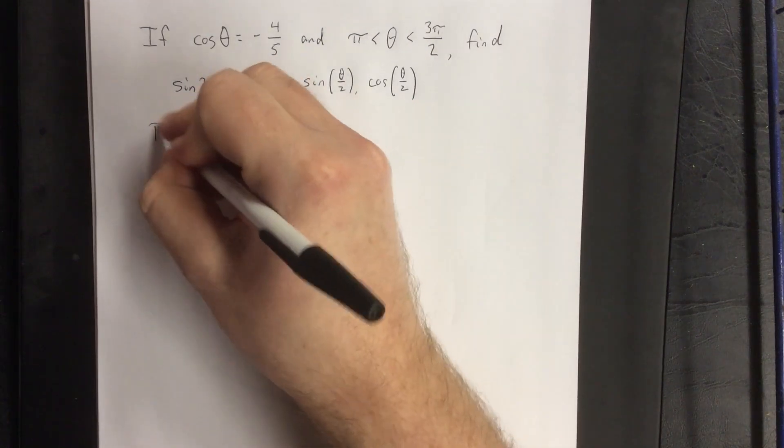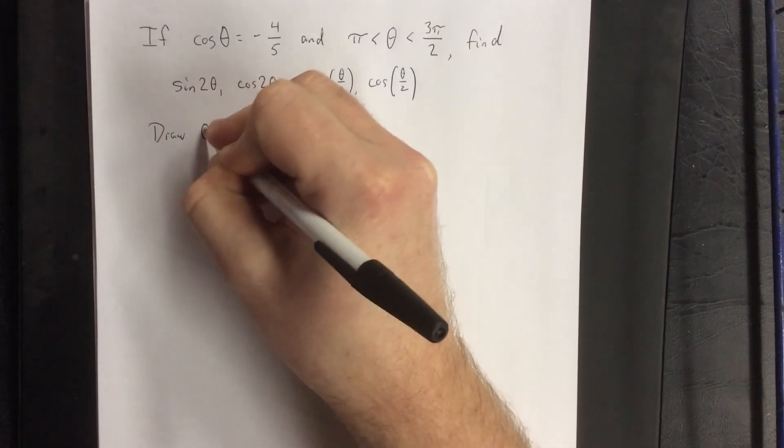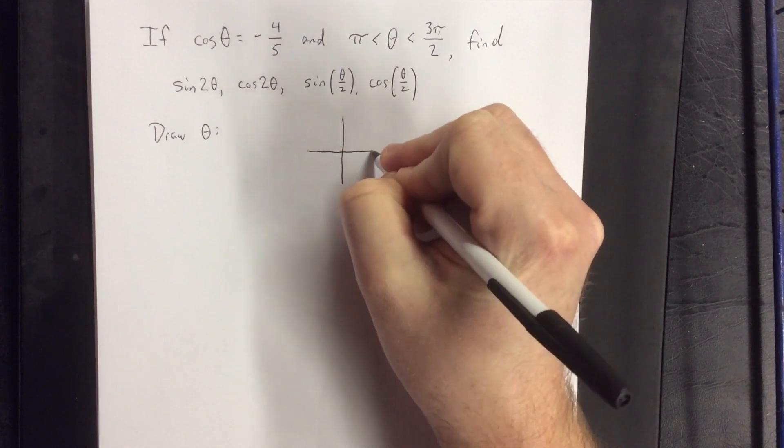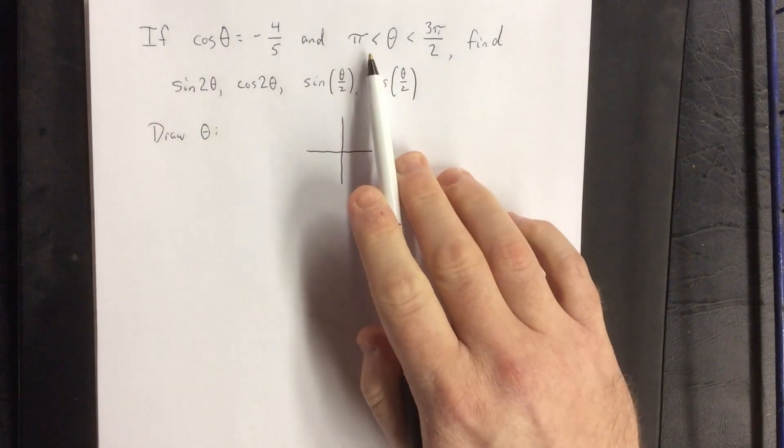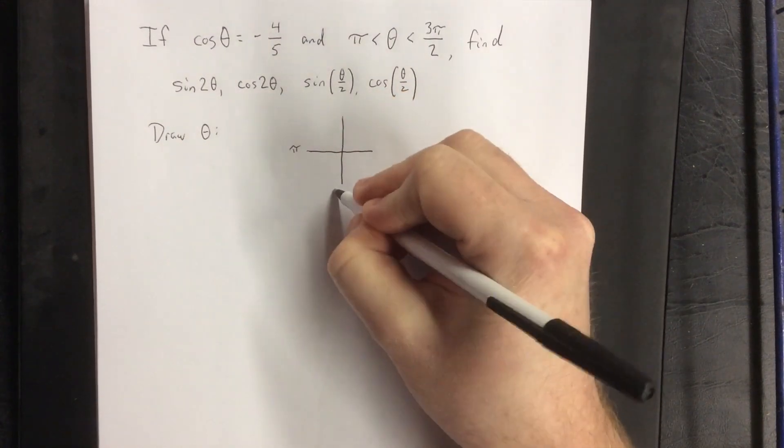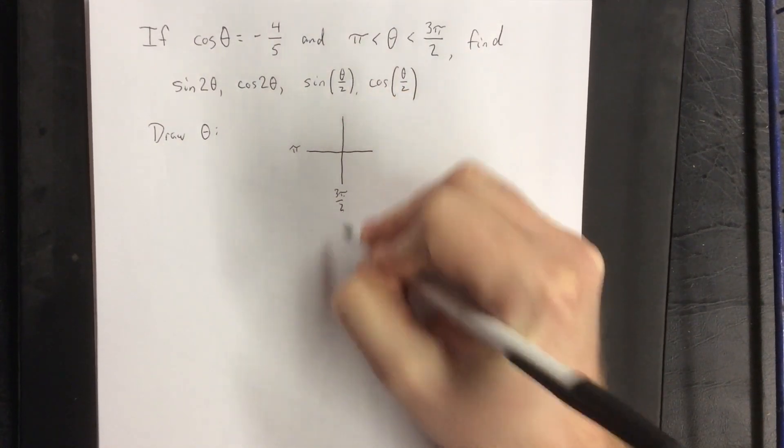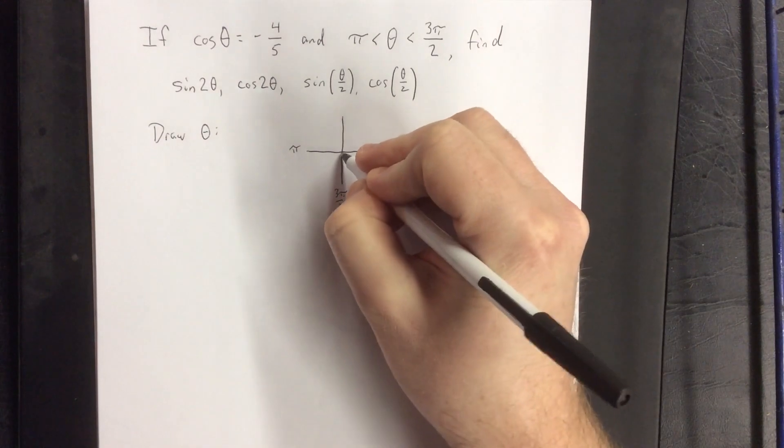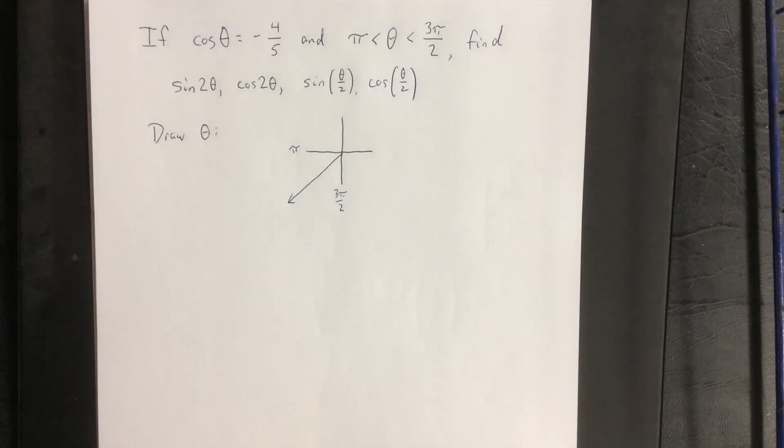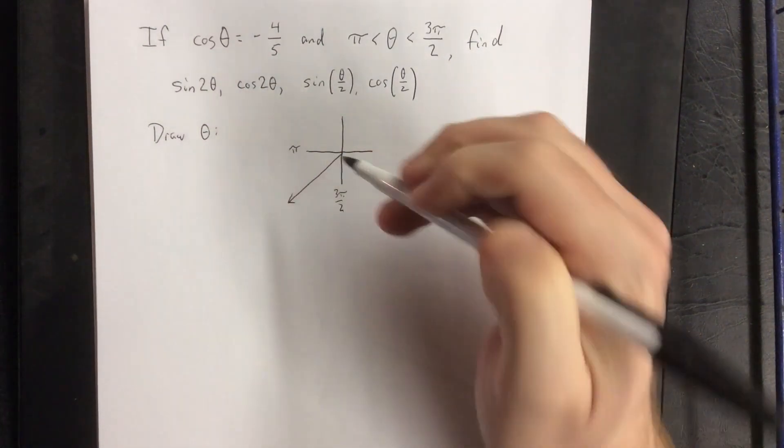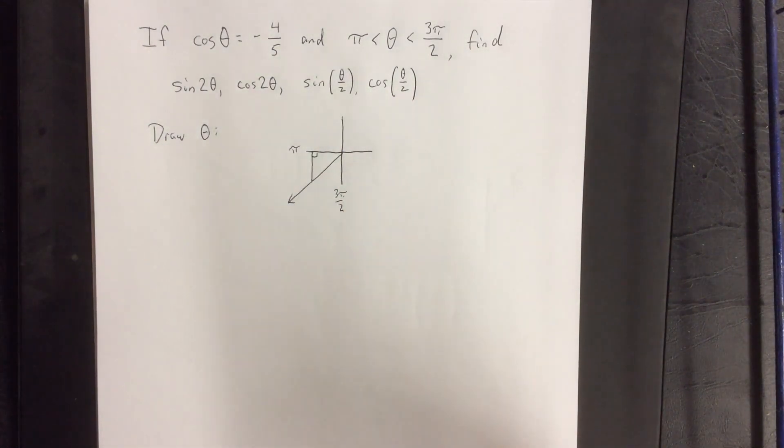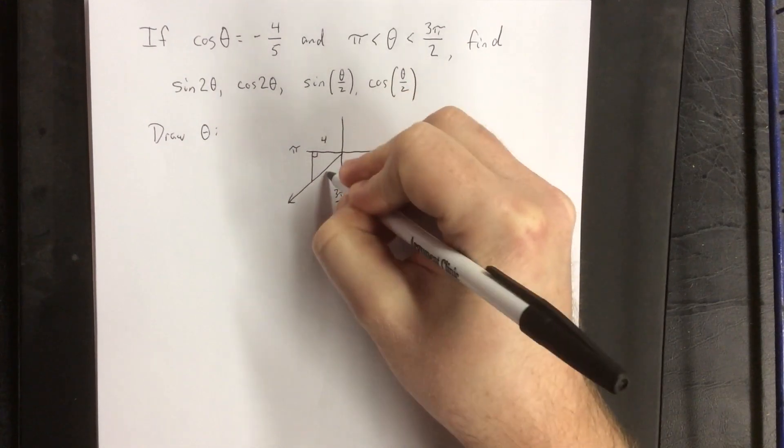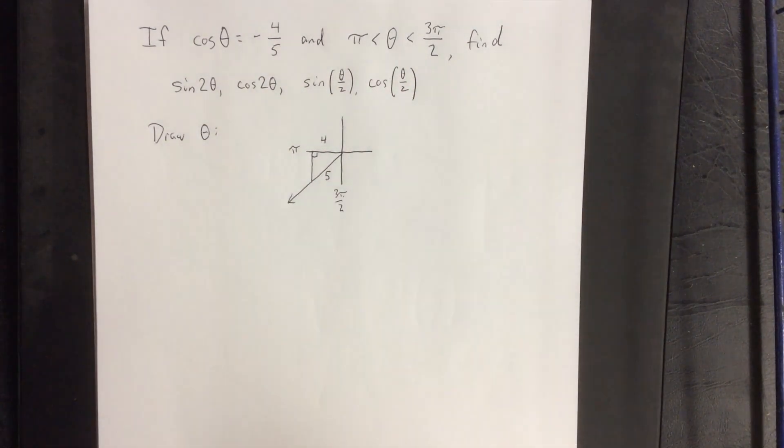As is typical, the first thing I'd like to do is draw theta. So first thing to do is figure out in what quadrant should I be drawing theta. In this case, we were told flat out that theta lies between π radians and 3π/2 radians, meaning that this angle will be located in quadrant 3. Now given that the cosine is negative four-fifths, I can draw my reference triangle. The adjacent side should be 4, the hypotenuse should be 5, but because we're in quadrant 3, the adjacent side is going to wind up being negative.